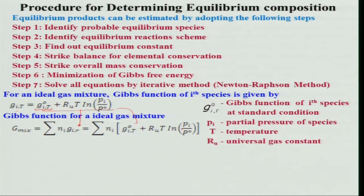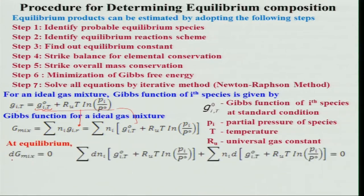The Gibbs function for an ideal gas mixture is G_mixture = Σ n_i·g_i. For equilibrium, dG_mixture = 0. Differentiating this expression with respect to n_i — keeping other terms constant — we differentiate the Gibbs function. The term dg_i^0(T) will be zero since it is not changing with n_i at a given temperature. Also, summing the partial pressures gives the total pressure, which remains constant, so that term is also zero.